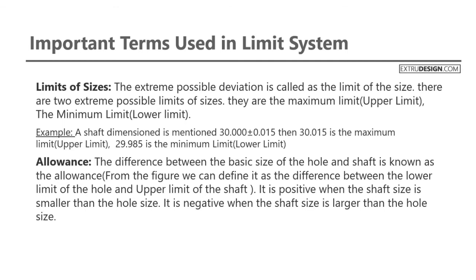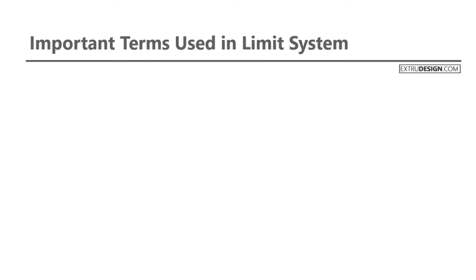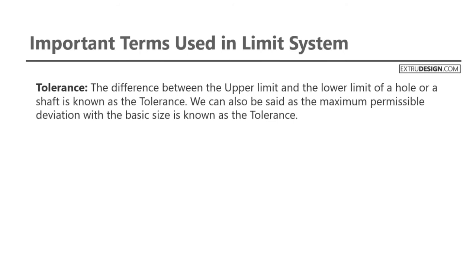The next term is allowance. The difference between the basic size of the hole and the shaft is known as allowance. It is positive when the shaft is smaller than the hole size, and negative when the shaft is larger than the hole size. For example, hole dimensions 29.990/29.980 and shaft dimensions 30.000/29.970 — the allowance is calculated as 29.980 minus 30.000, which equals minus 0.020. The negative sign implies that interference of material has occurred.